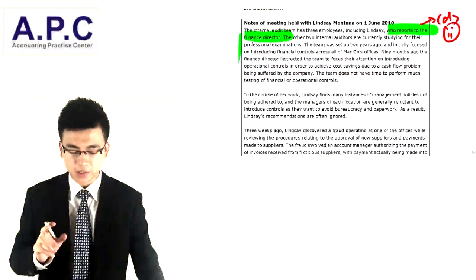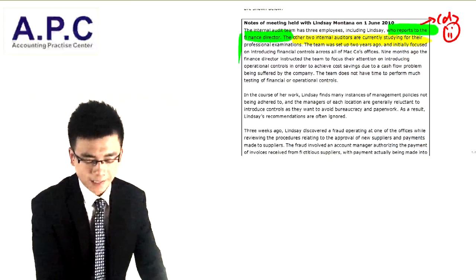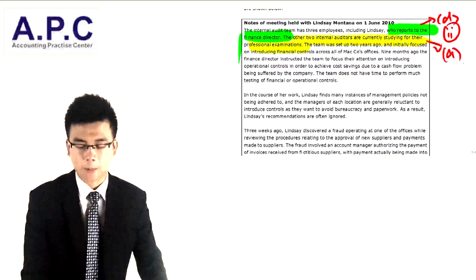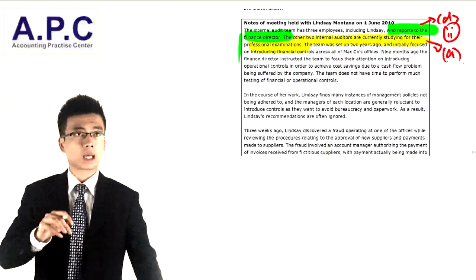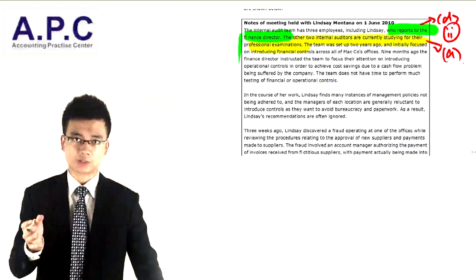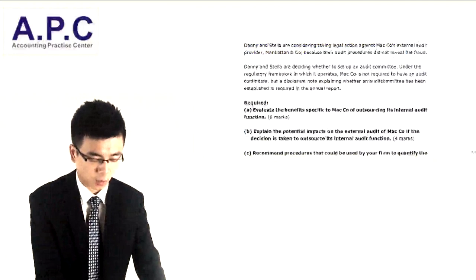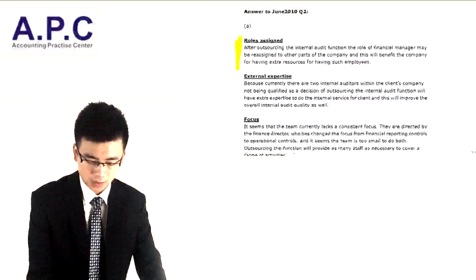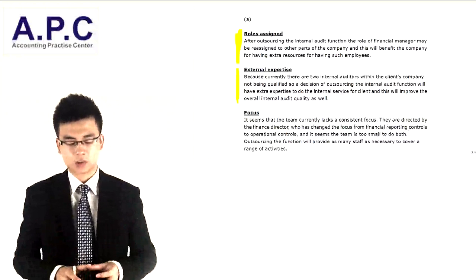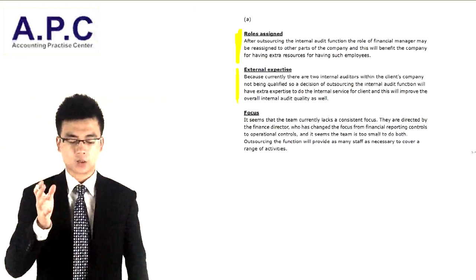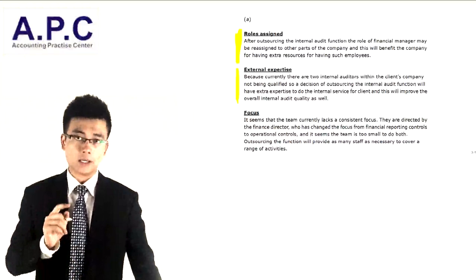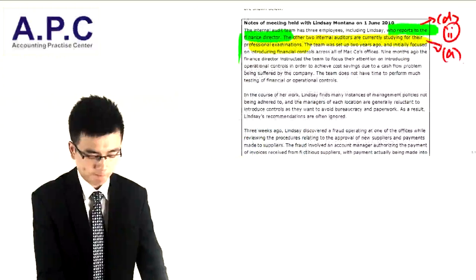The other two internal auditors are currently studying their professional examinations, so they may lack experience to do the internal audit work. By outsourcing the internal audit function to an external audit firm, the company will benefit from having greater expertise. The second point for Part A: currently there are two internal auditors within the company who are not qualified, so by outsourcing the function this will improve the overall internal audit quality.